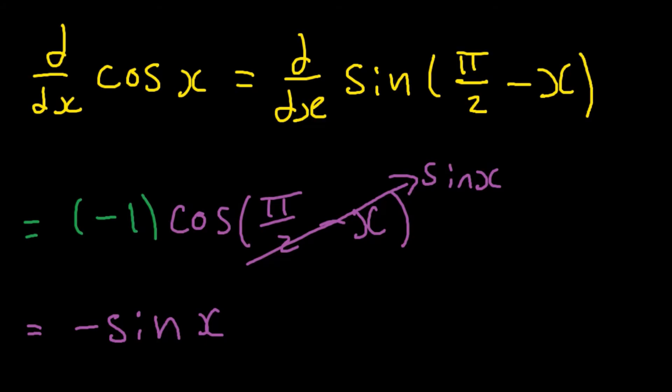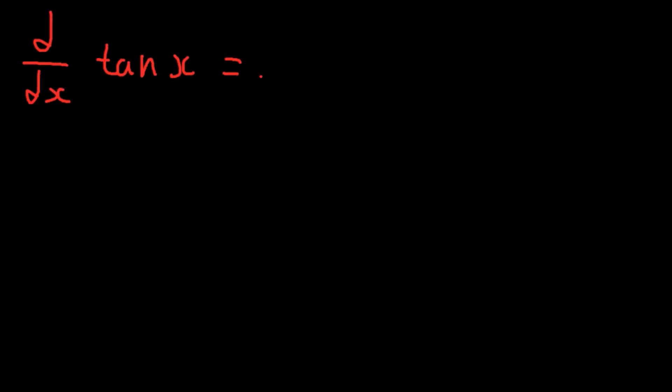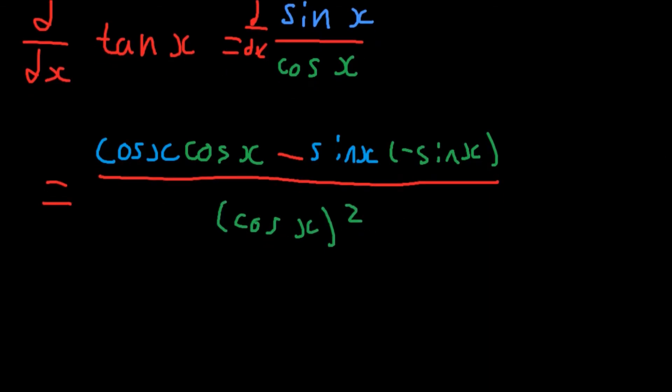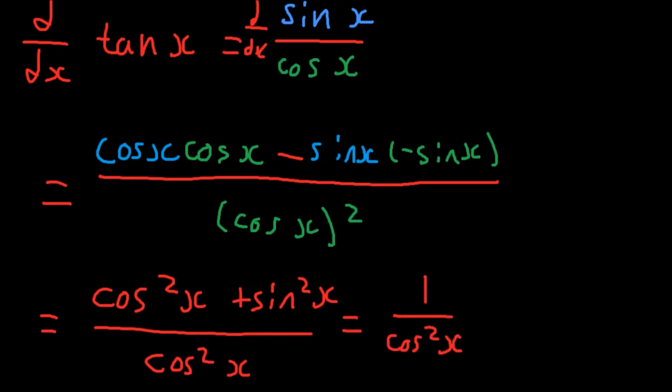Lastly, we have the tangent of x. The first thing to do here is to use the tangent identity and turn it into sin x over cos x. Using the quotient rule, the derivative becomes cos x times cos x minus sin x times minus sin x divided by cos squared of x. Simplifying things, the derivative becomes cos squared x plus sin squared x all divided by cos squared of x. The top simplifies to one using the Pythagorean identity, and this makes the derivative one over cos squared x, or more commonly, secant squared of x.